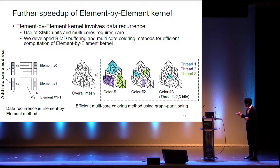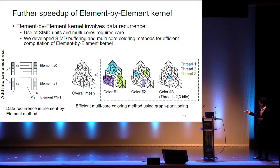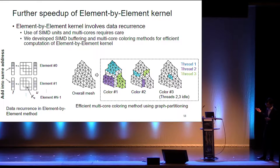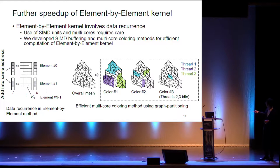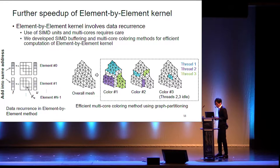We developed a multicore coloring method for efficient multicore performance. In a normal coloring method, we decompose the overall mesh so each color doesn't overlap on the nodes, but that leads to bad cache reuse efficiency. So we explicitly partition the problems according to the number of threads. For example, using three threads: thread one computes one part, thread two another, thread three another, then we have a barrier, and in the second step each thread computes the next region. By using this, each thread can reuse the nodal values on cache, leading to better performance on multicore CPUs.